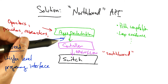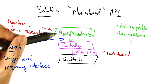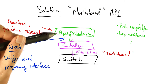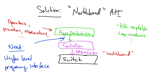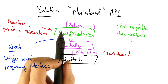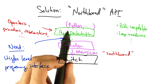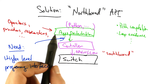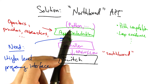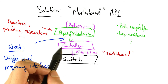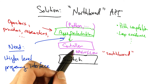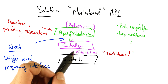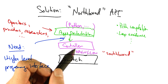The benefits of such a northbound API include vendor independence, as well as the ability to quickly modify or customize control through popular programming languages. These applications might be written in high-level languages such as Python, and wouldn't have to perform low-level switch modifications, but could instead express policies in terms of much higher-level abstractions.